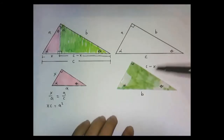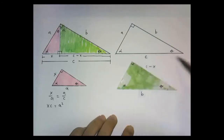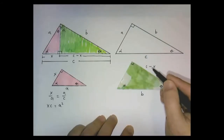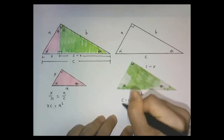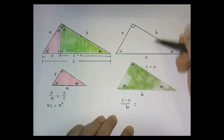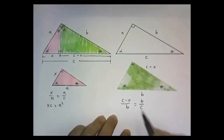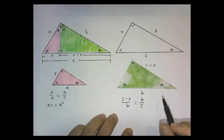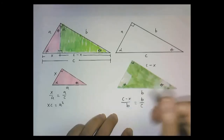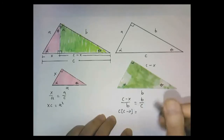We'll do the same thing comparing these two triangles. The ratio of this side to this side — c minus x to B — is going to be equal to the ratio of B to C. So: c minus x divided by B equals B divided by C. Cross-multiplying, C times (c minus x) equals B times B, or B squared.